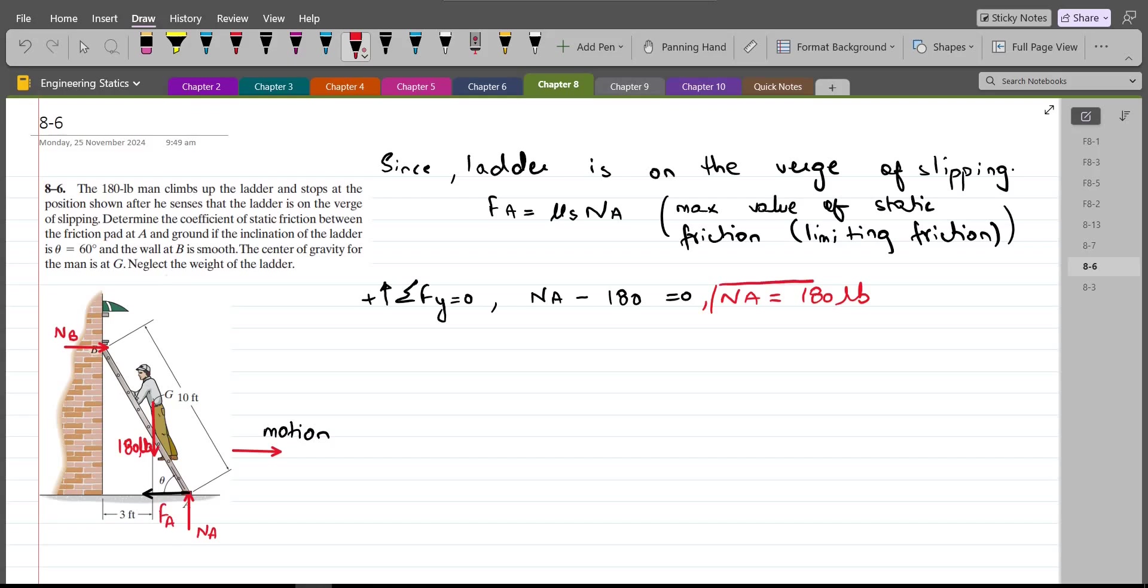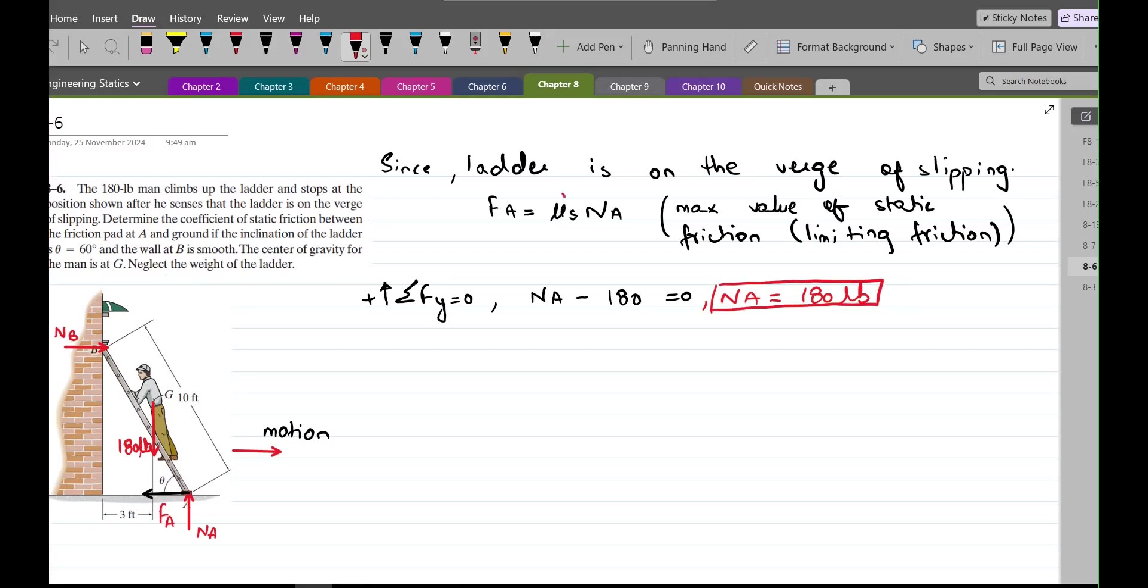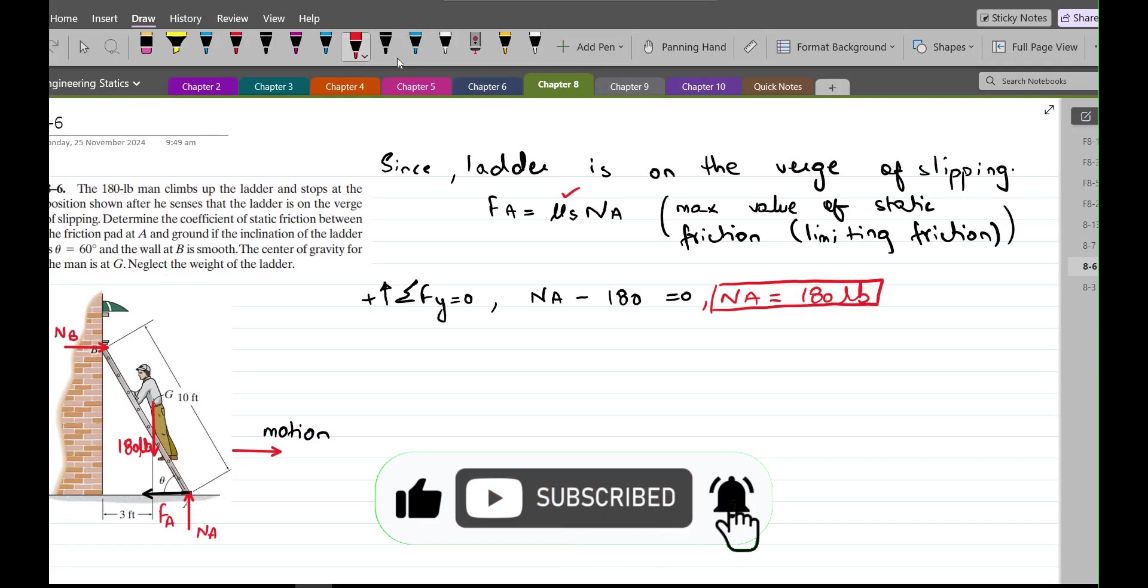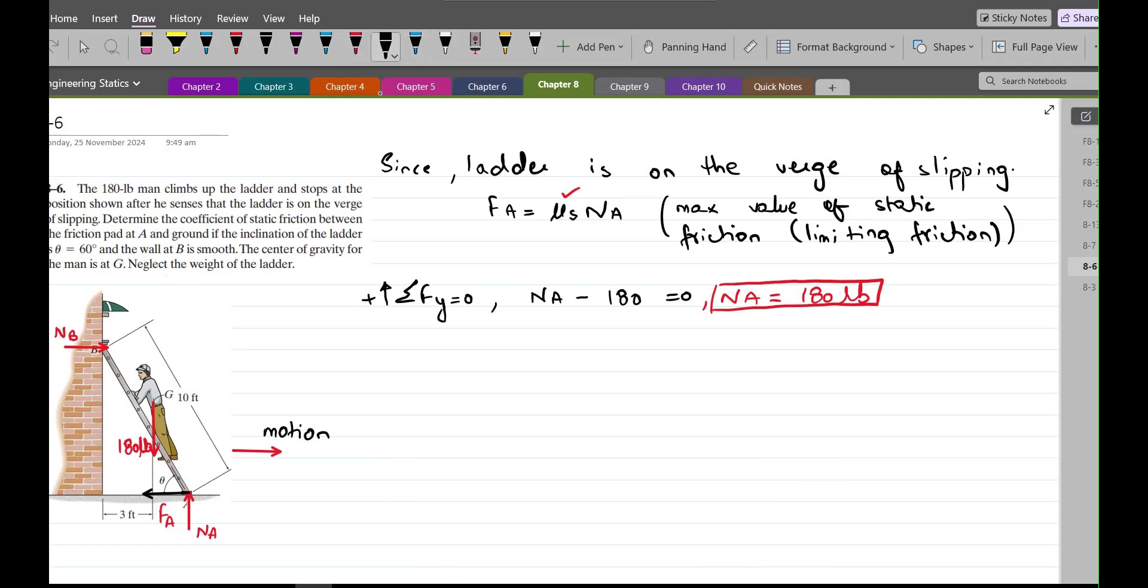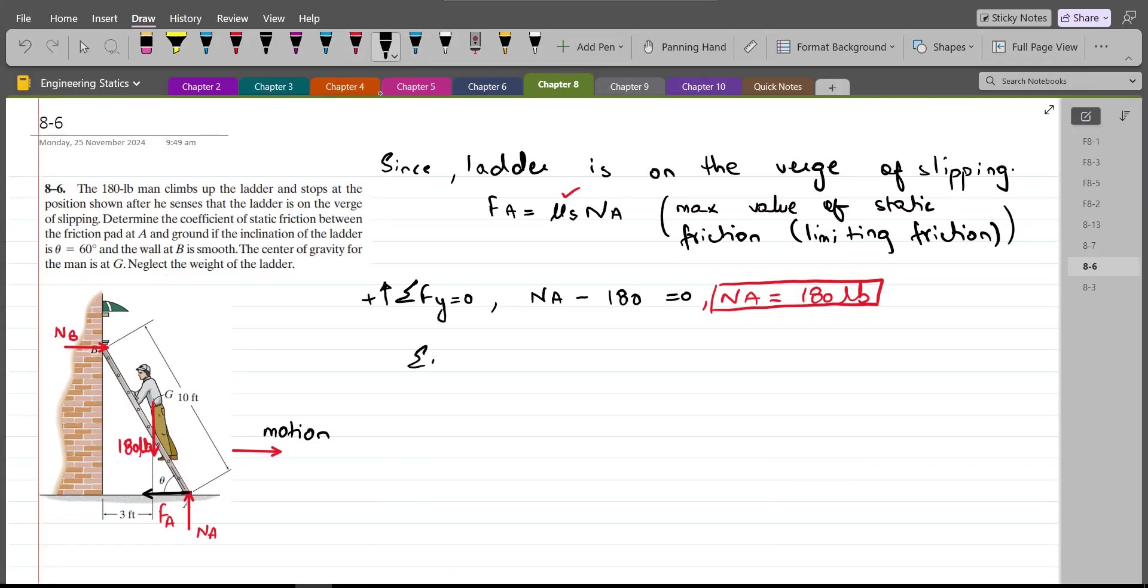But to find the coefficient of static friction, we have to find the FA as well. For that, we are going to use another equilibrium equation, which is summation of moments at point B equals to 0. I am considering counterclockwise direction as positive. Since the line of action of the NB force is passing through point B, it does not have any moment with respect to point B. So the NB will not produce any moment about point B.